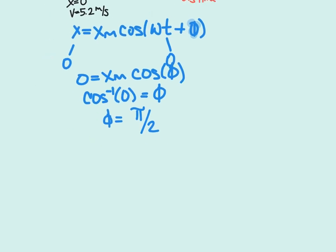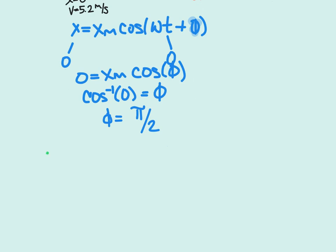Now that we have phi, we can use the velocity equation, where velocity equals omega times amplitude sine of omega t plus phi.